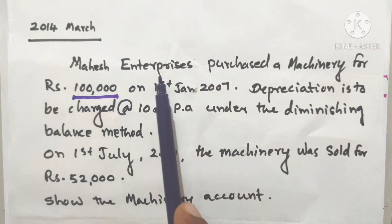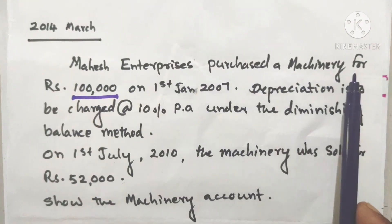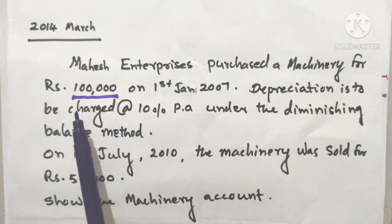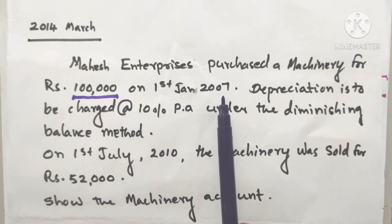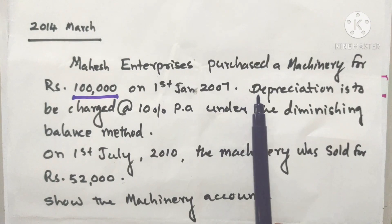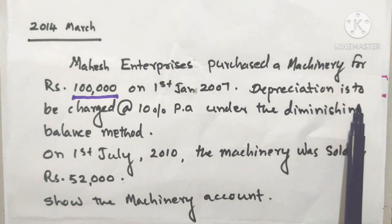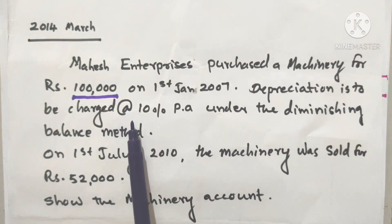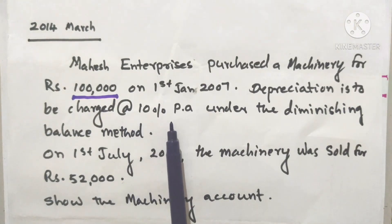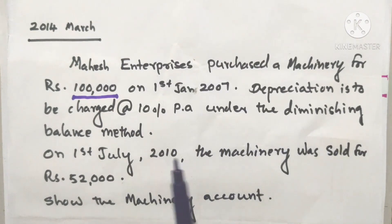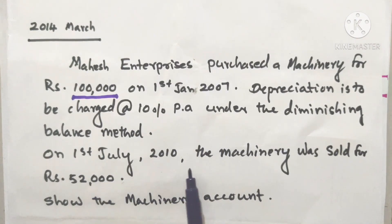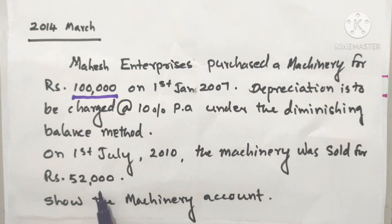Mahesh Enterprises purchased a machinery for rupees 1 lakh on 1st January 2007. Depreciation is to be charged at the rate of 10% per annum under the diminishing balance method. On 1st July 2010, the machinery was sold for rupees 52,000.